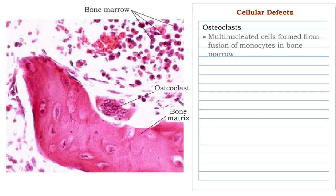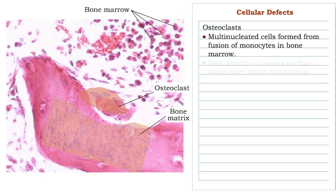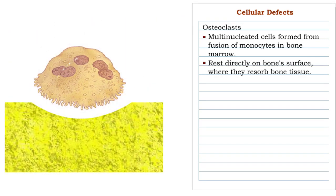Osteoblasts are large multinucleated cells, formed from the fusion of monocytes in the bone marrow. These cells rest directly on the surface of the bone, where they resorb bone tissue.